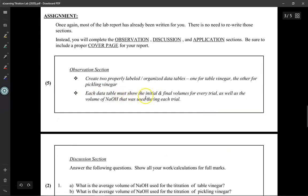Each data table must show the initial and final volumes for every trial as well as the volume of sodium hydroxide that was used during each trial. Depending on how well your table is organized, hopefully it makes sense, I will give you a mark out of five. Don't forget to put in a detailed title. That is the observation section.